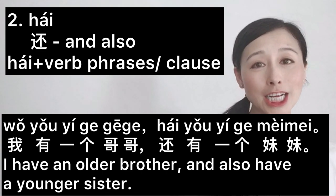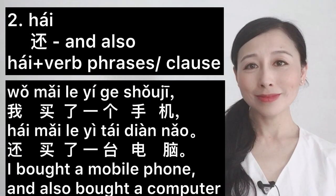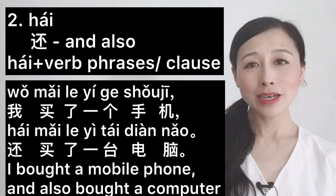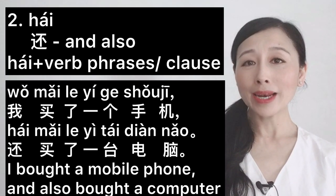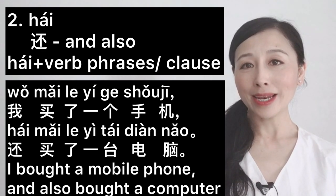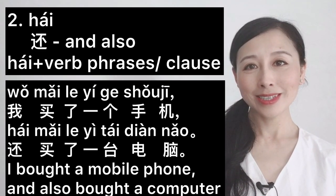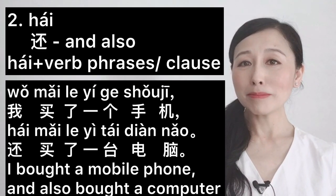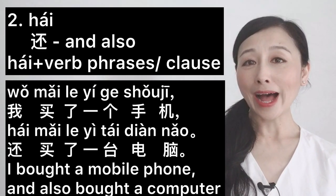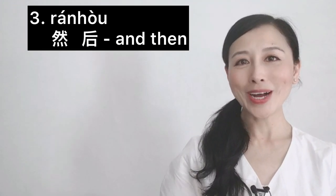Another example for 还: 'I bought a mobile phone and also bought a computer.' 我买了一个手机，还买了一台电脑。